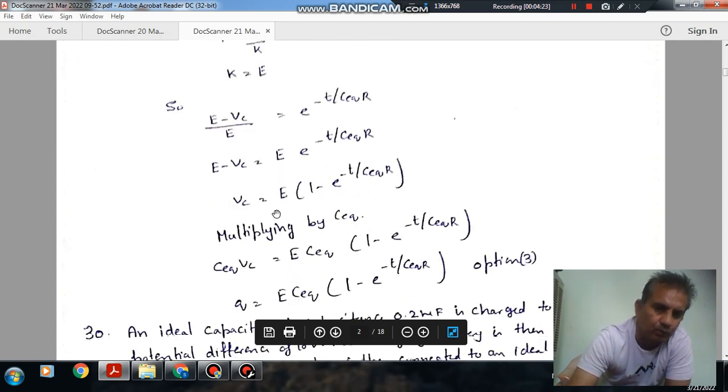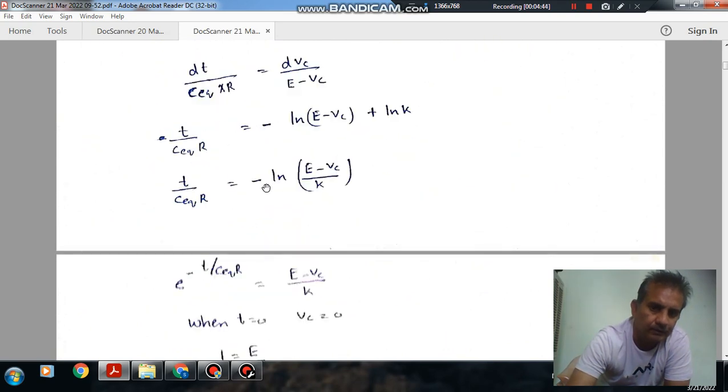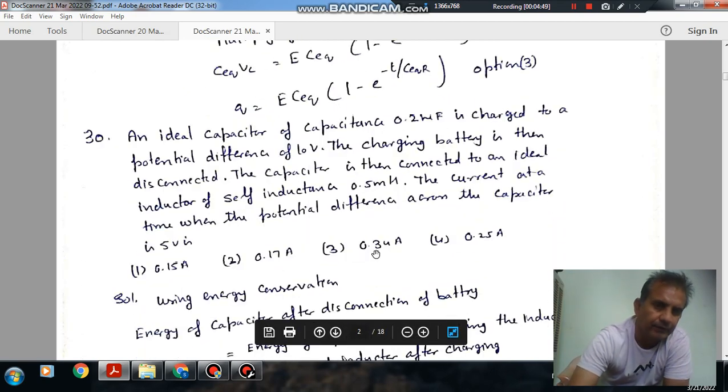Multiplying both sides by C equivalent, this becomes Q equals C equivalent E times bracket 1 minus E to the power minus T over C equivalent R, because capacitance times potential equals charge. So option 3 is the right answer.